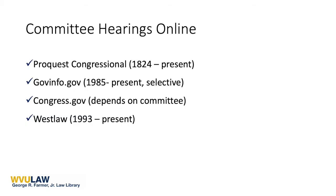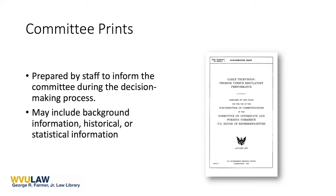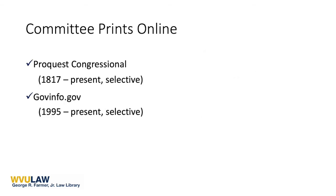Hearing transcripts may be found at congress.gov, govinfo.gov, ProQuest Congressional, and Westlaw. Committee prints are generally viewed as internal background information, usually prepared by staffers to inform the committee while it conducts its business. This is in contrast to a committee report, which is the final work product of the committee itself. Like a hearing transcript, committee prints give the researcher insight into the information the committee had at its disposal. They are excellent sources for statistical and historical information and for analysis of the pros and cons of various parts of the legislation. Committee prints are available from ProQuest Congressional and govinfo.gov.